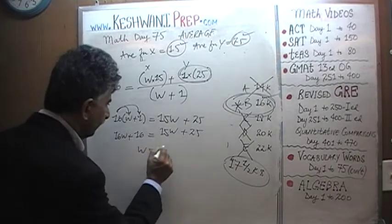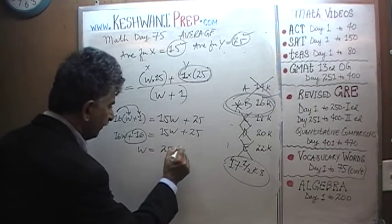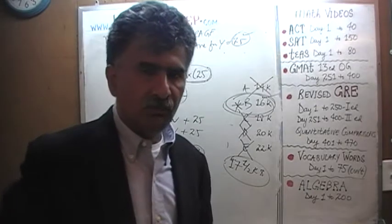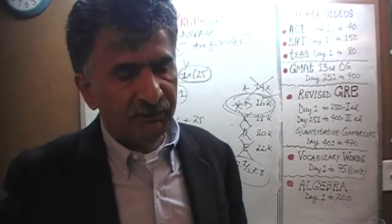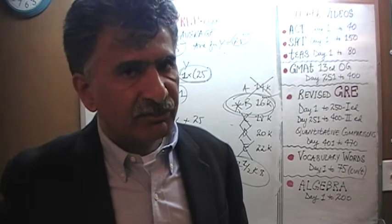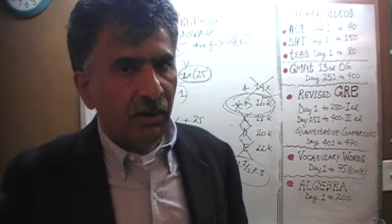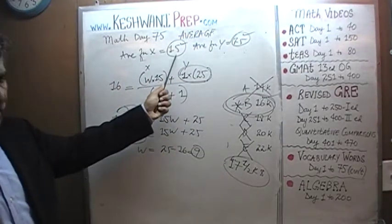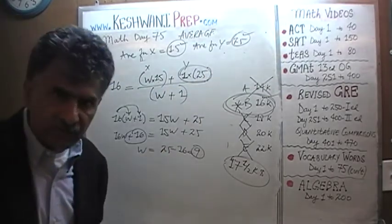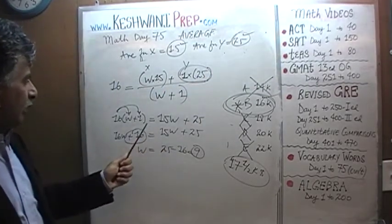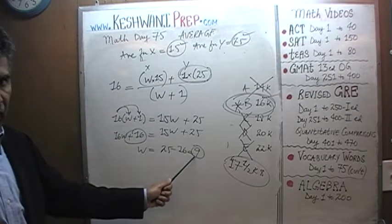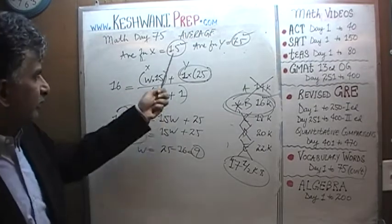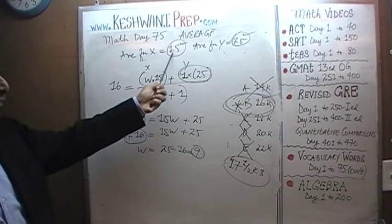Bringing 15W to the other side, we end up with W equals 25 minus 16, which is 9. That's it — we're done. The ratio needs to be 9 to 1 in order for the overall average to be $16,000, given that the average salary in department X is $15,000 and in department Y is $25,000. We need 9 times as many people in the department with the lower salary because they pull the average down. The overall average of $16,000 is very close to the average in department X.